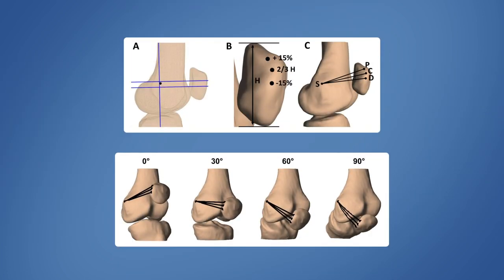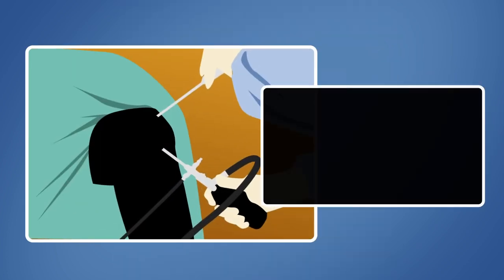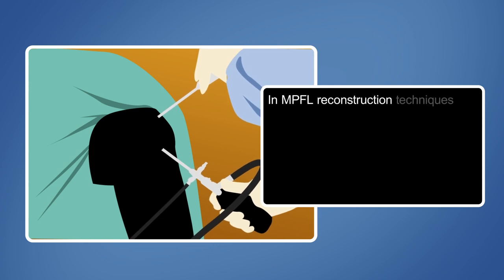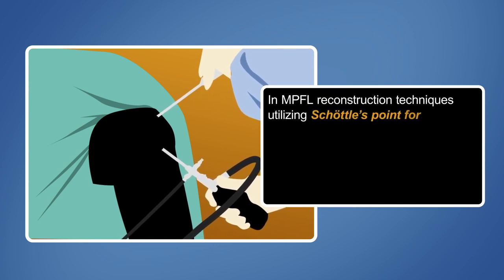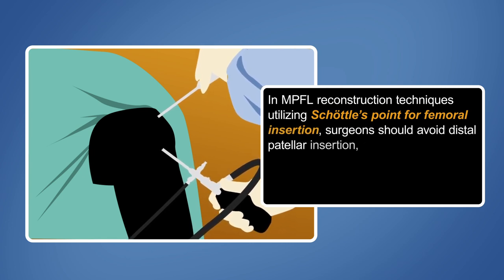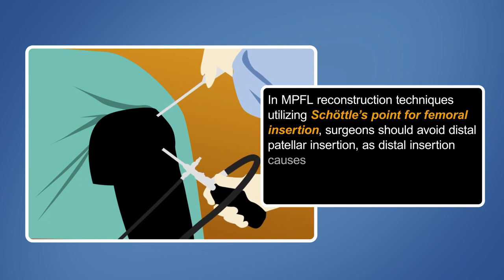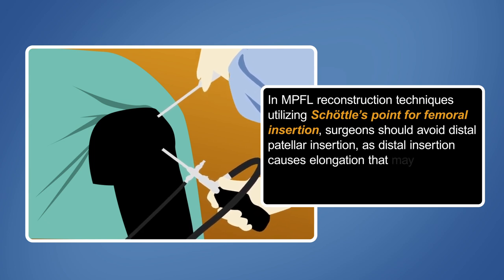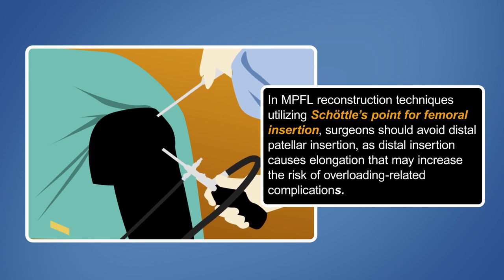Nevertheless, the results reveal that the median length of the proximal MPFL continuously decreases during flexion, indicating slackening. In contrast, the median length of the distal MPFL increases at deeper flexion angles, indicating tightening. These findings suggest that in MPFL reconstruction techniques utilizing Schottel's point for femoral insertion, surgeons should avoid distal patellar insertion, as distal insertion causes elongation that may increase the risk of overloading-related complications.